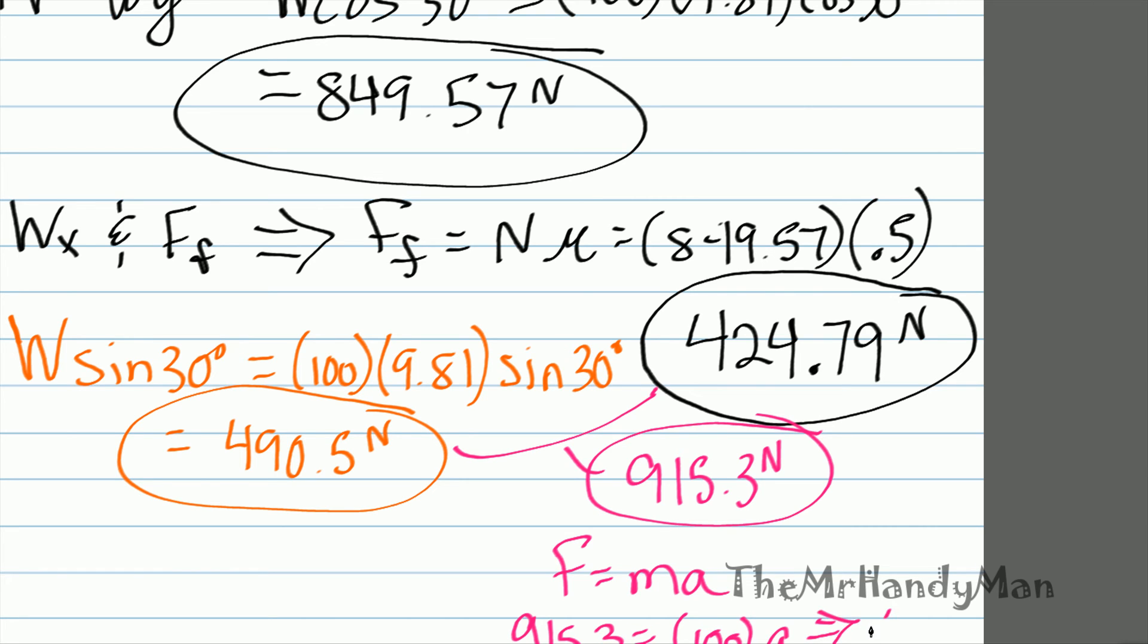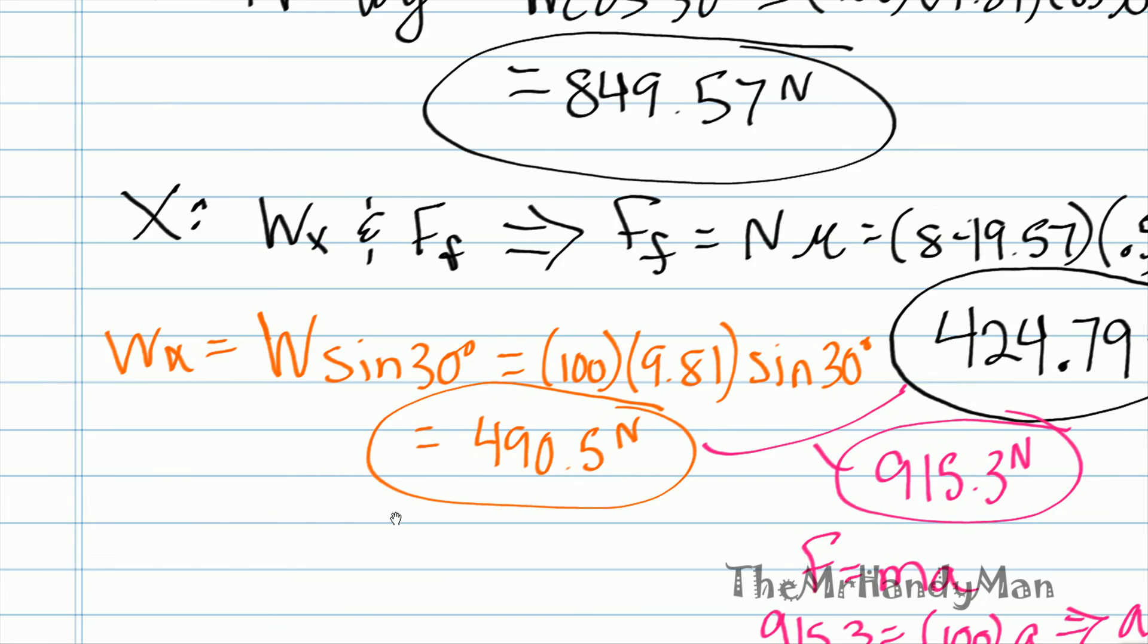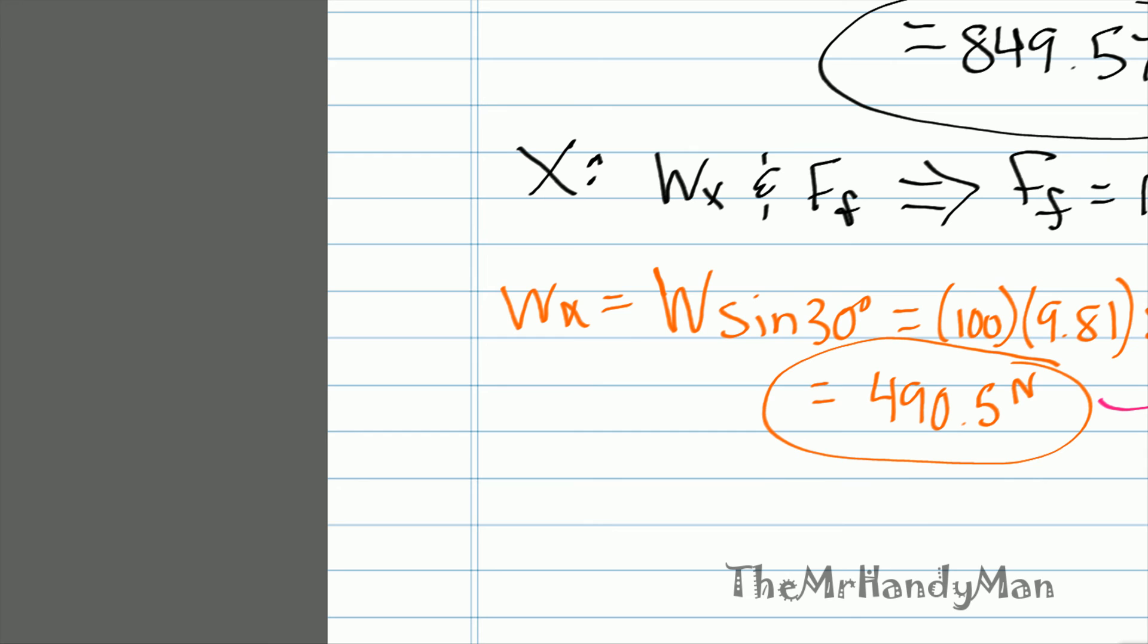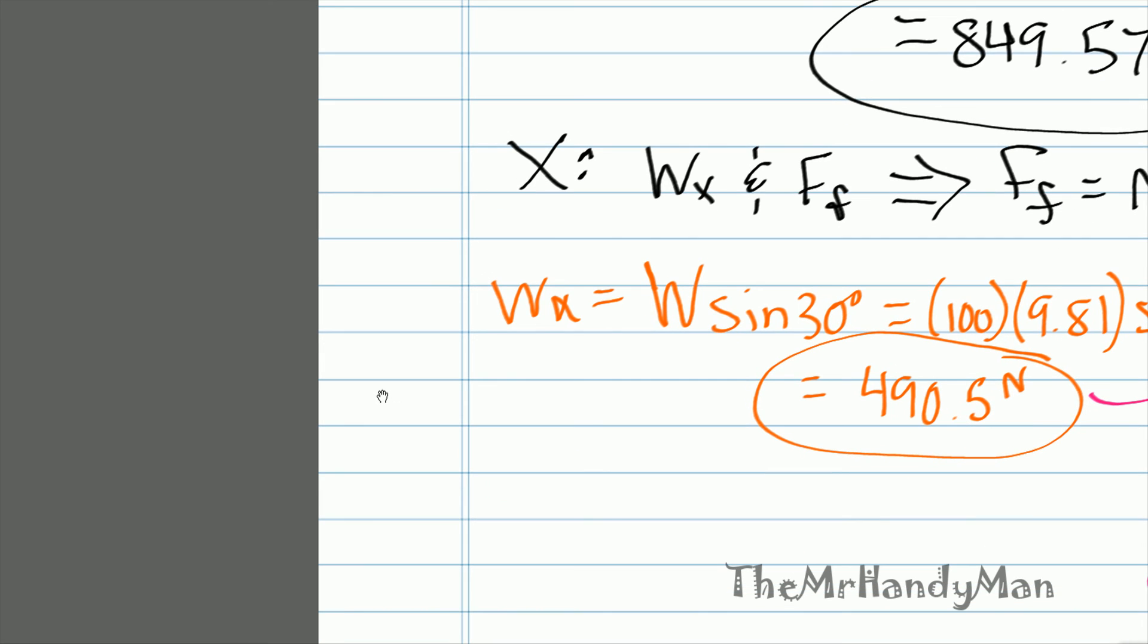Which when you work that out, a is equal to 9.15, and I'm just going to bring this over here in green, but acceleration is equal to 9.153 meters per second squared. There's our acceleration.